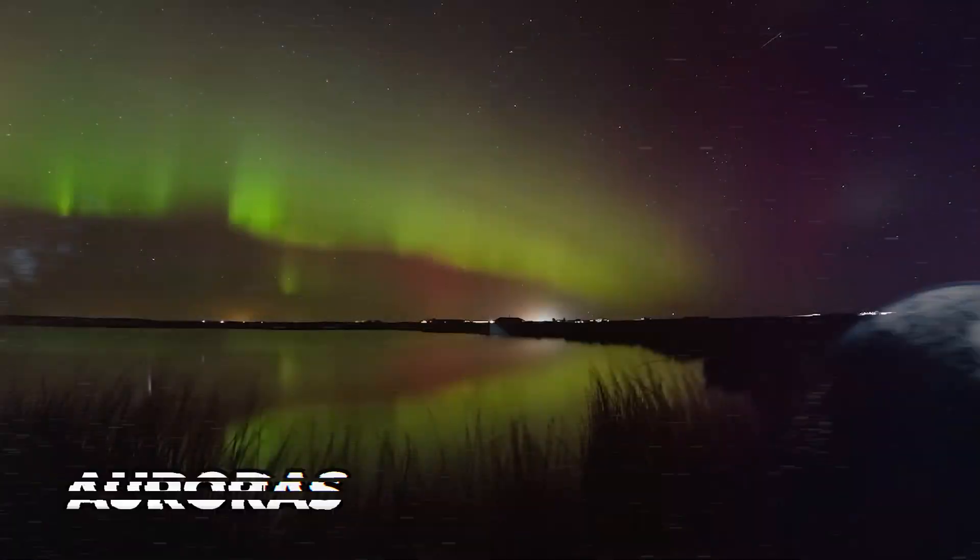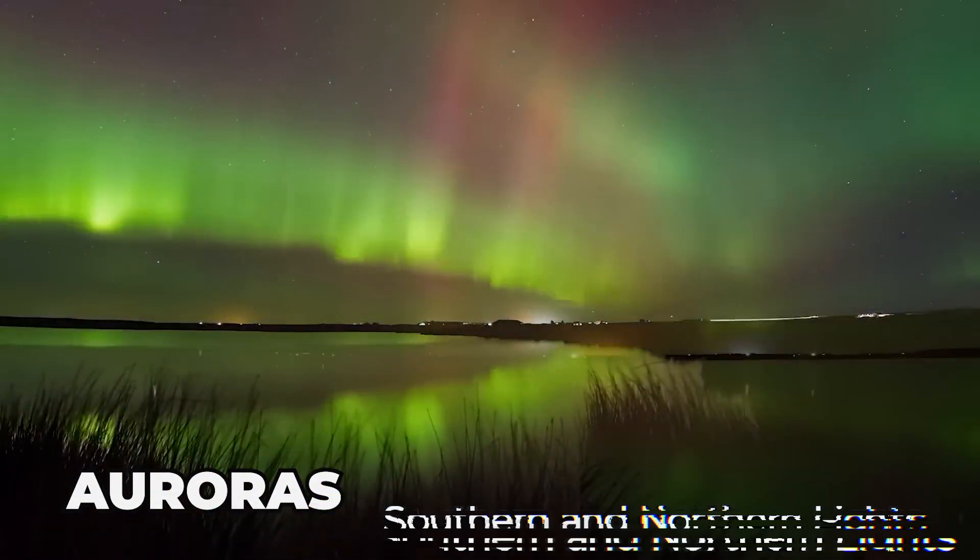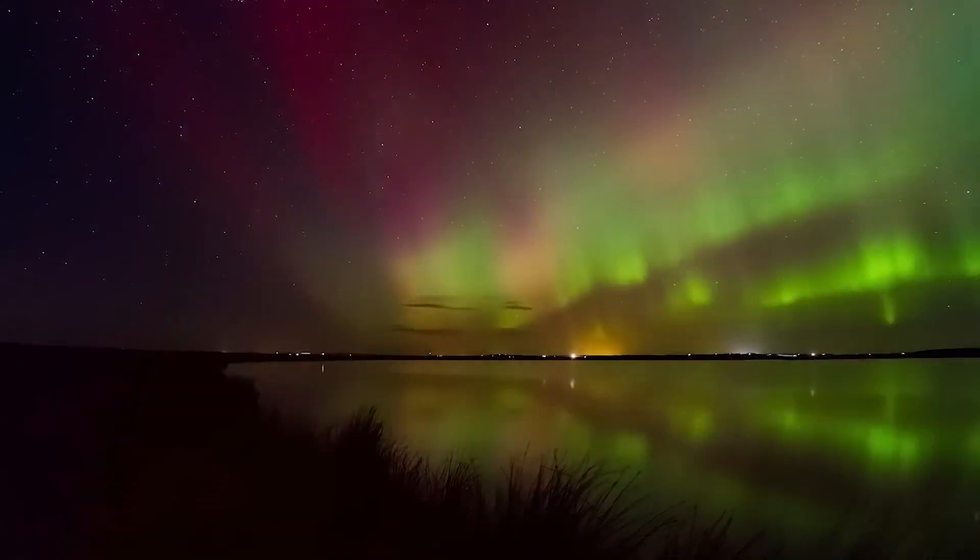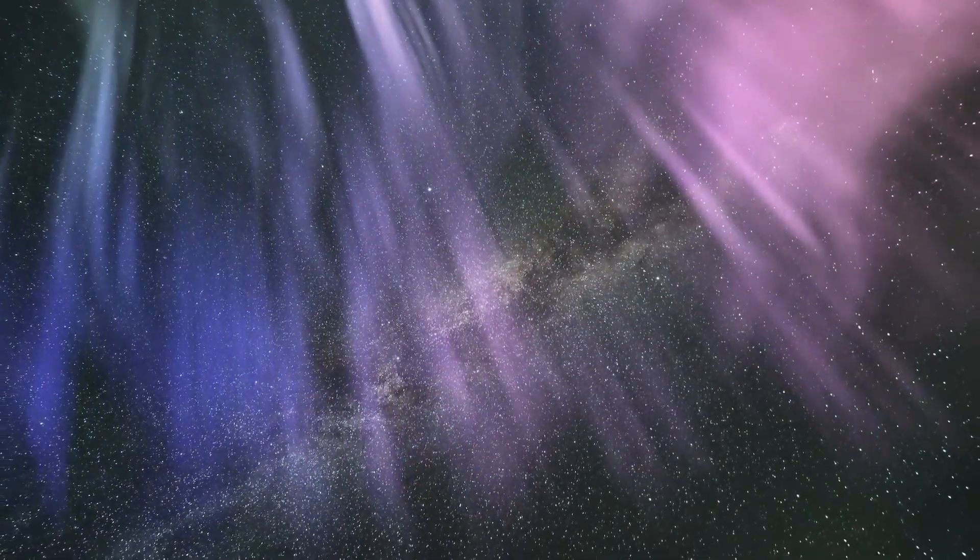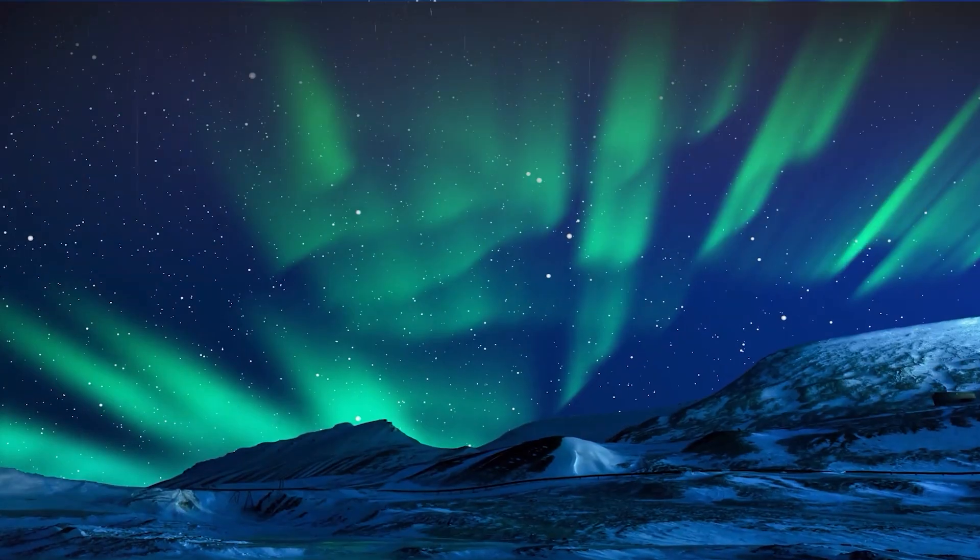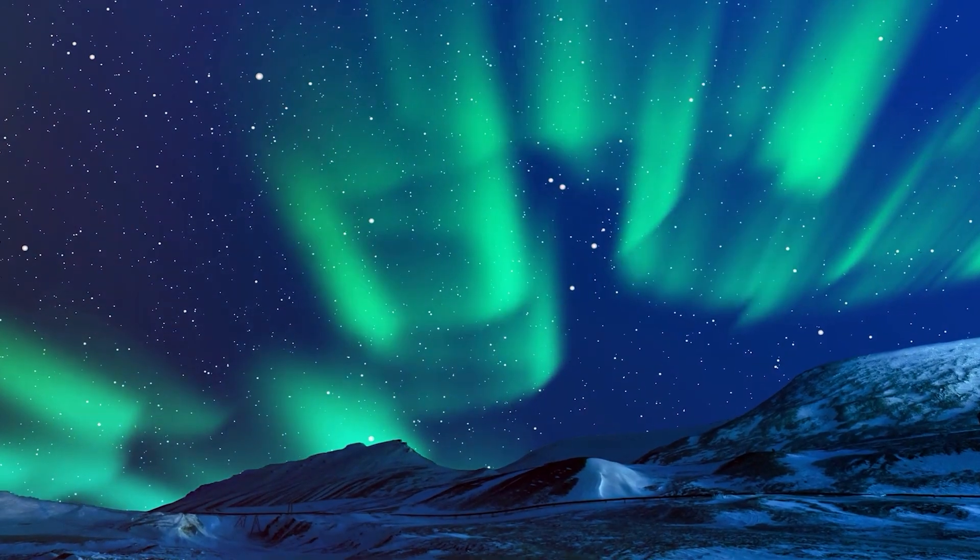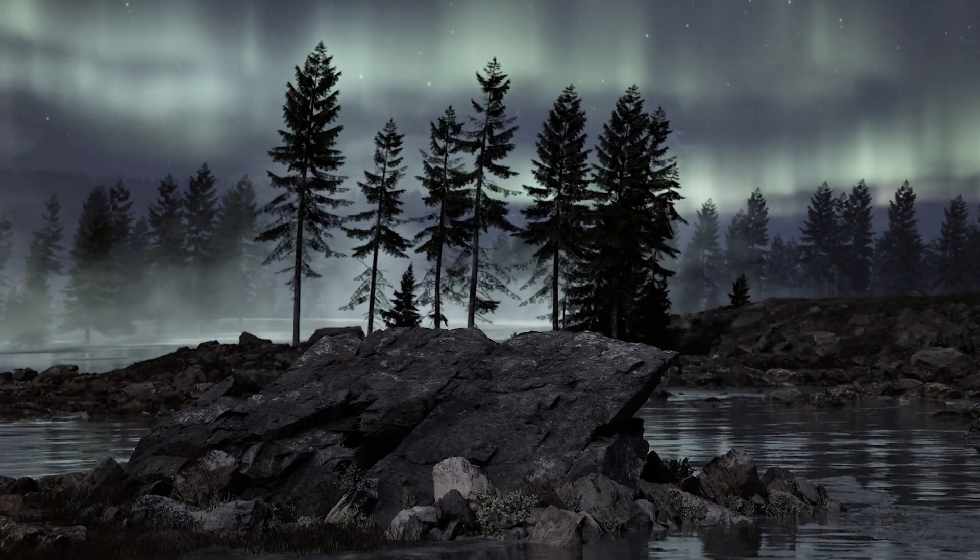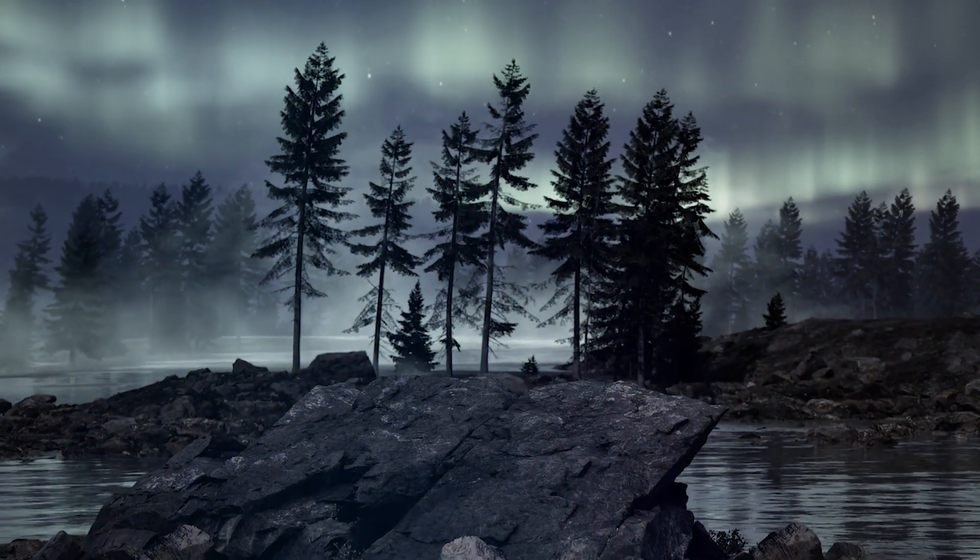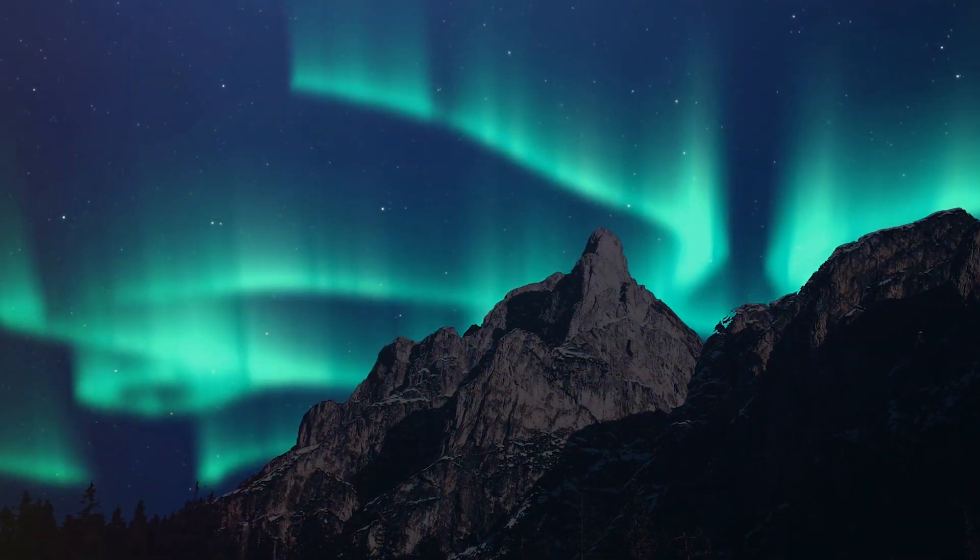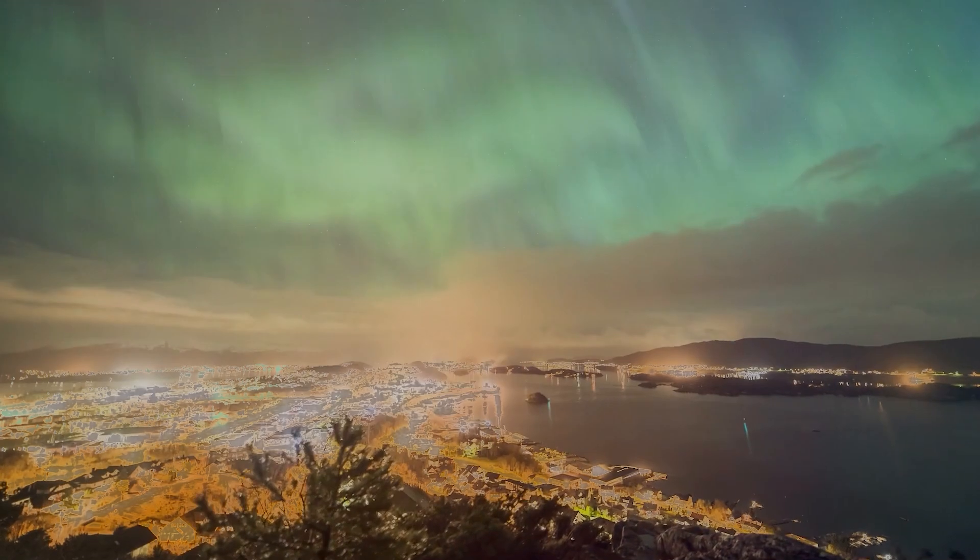That year the auroras, commonly known as the Southern and Northern Lights, were truly extraordinary. These dazzling light displays were more intense than they had been in the last 160 years. While auroras typically graced the skies near the Earth's poles, during this exceptional year they extended far beyond those regions. The illuminated lights could be witnessed not only near the poles, but also closer to the equator.